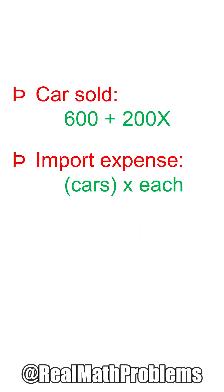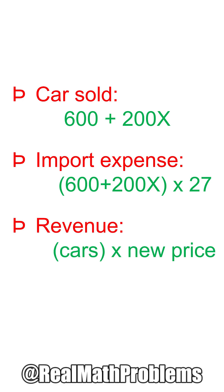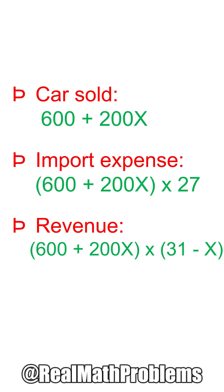The importing expense will be the expense for each car times the number of cars sold, or 27 times (600 plus 200X). Similarly, Dave will have the revenue by the new price as (600 plus 200X) times (31 minus X).